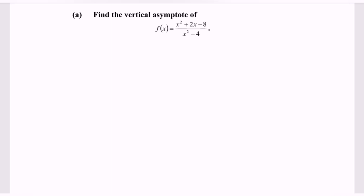Hi everyone, welcome to my channel. So in this video, I'm going to discuss the example for limits. Find the vertical asymptote of the function f(x) = (x² + 2x - 8) / (x² - 4).